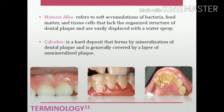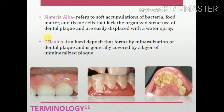Some common terminologies associated with plaque: Materia alba refers to soft accumulations of bacteria, food matter, and tissue cells. Unlike plaque, it lacks an organized structure and is easily displaced by a water spray. Calculus is a hard deposit that forms by the mineralization of plaque and is generally covered by a layer of unmineralized plaque.